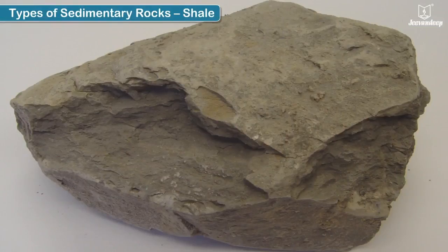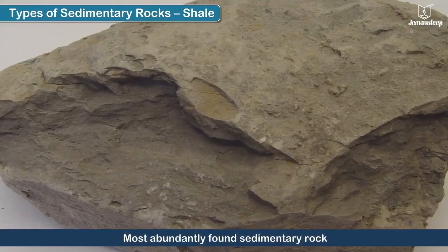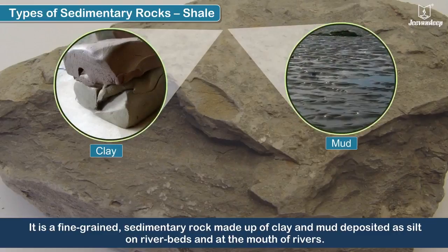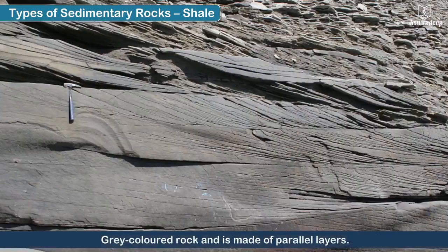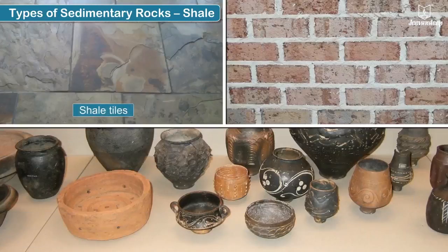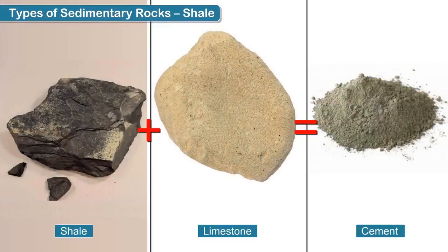Shale is the most abundantly found sedimentary rock. It is a fine-grained sedimentary rock made up of clay and mud deposited as silt on river beds and at the mouth of rivers. This is a gray-colored rock and is made of parallel layers. Shale is largely used in making tiles, bricks, and pottery items.